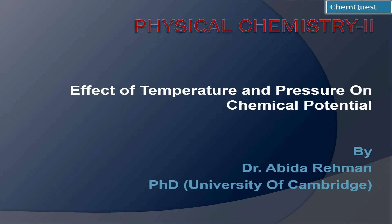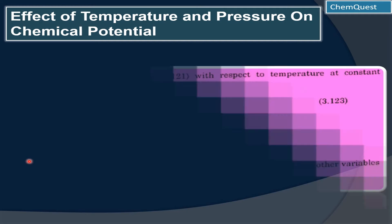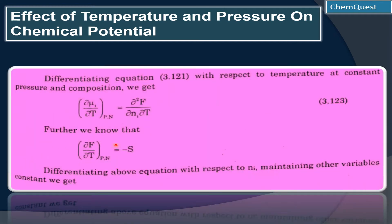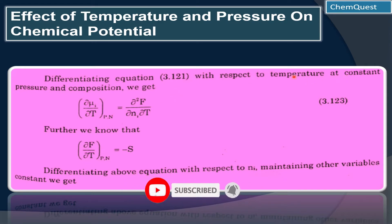Welcome to the class of Physical Chemistry 2. Today we will discuss the effect of temperature and pressure on chemical potential. In the previous lecture we studied about chemical potential and we took free energy as chemical potential. So let's start — we will differentiate equation 3.1.21 with respect to temperature at constant pressure and composition.